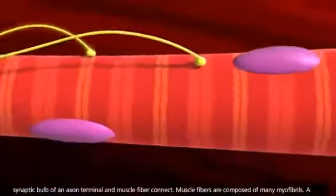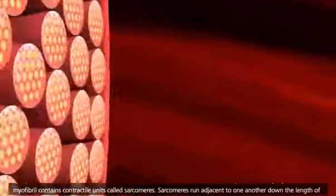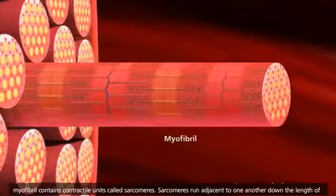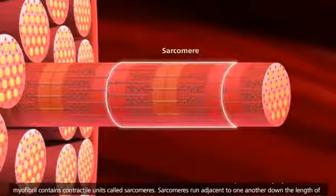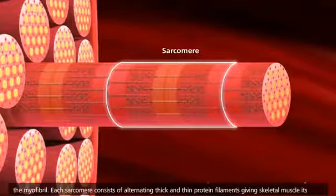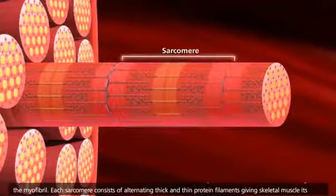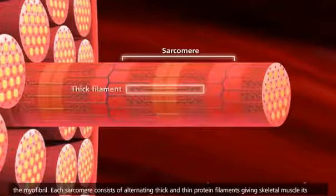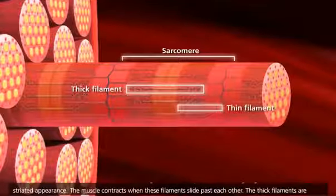Muscle fibers are composed of many myofibrils. A myofibril contains contractile units called sarcomeres. Sarcomeres run adjacent to one another down the length of the myofibril. Each sarcomere consists of alternating thick and thin protein filaments, giving skeletal muscle its striated appearance.